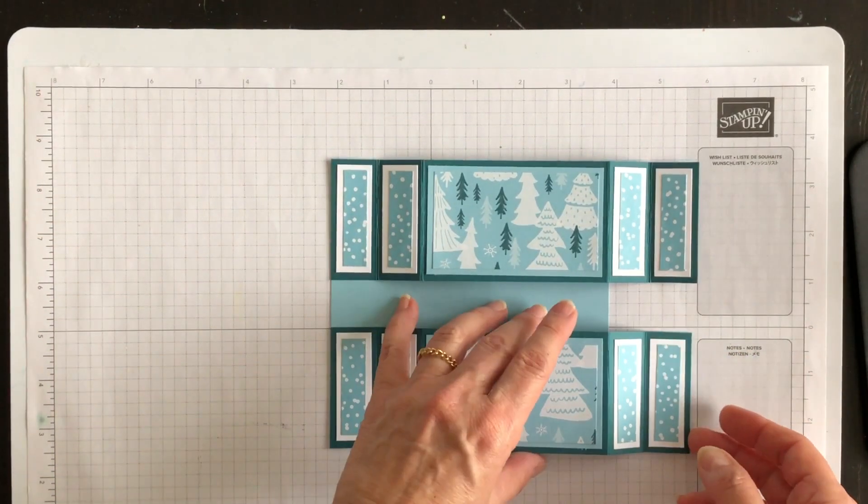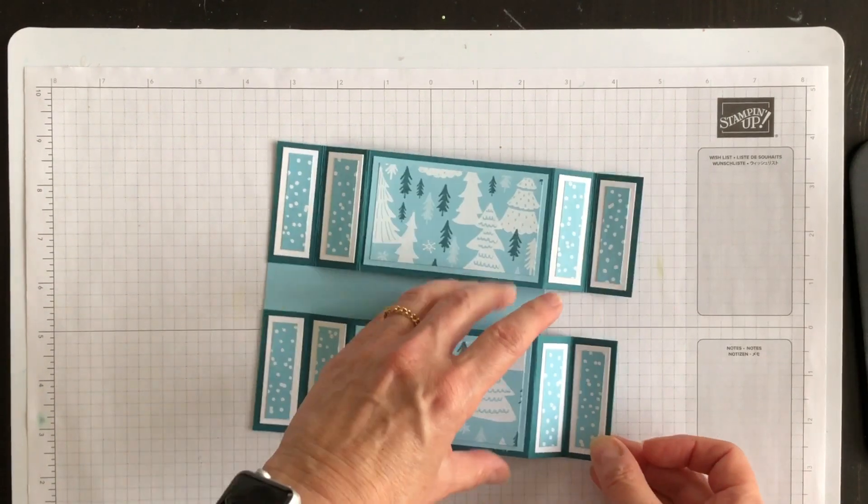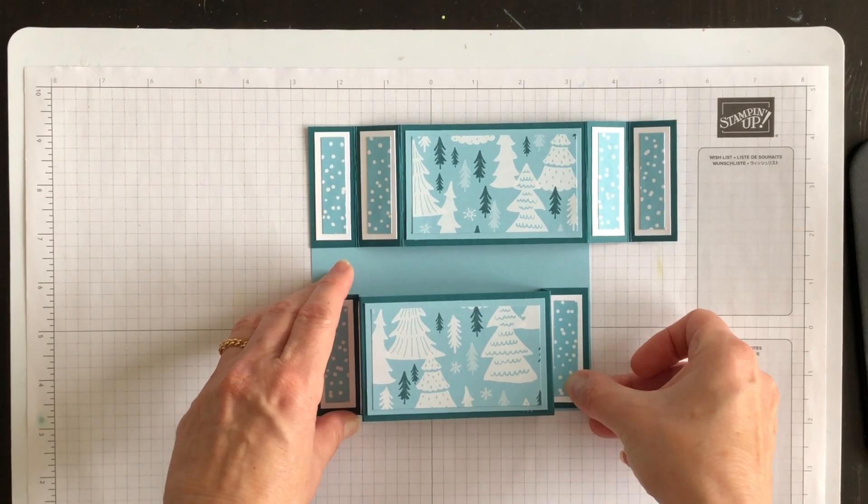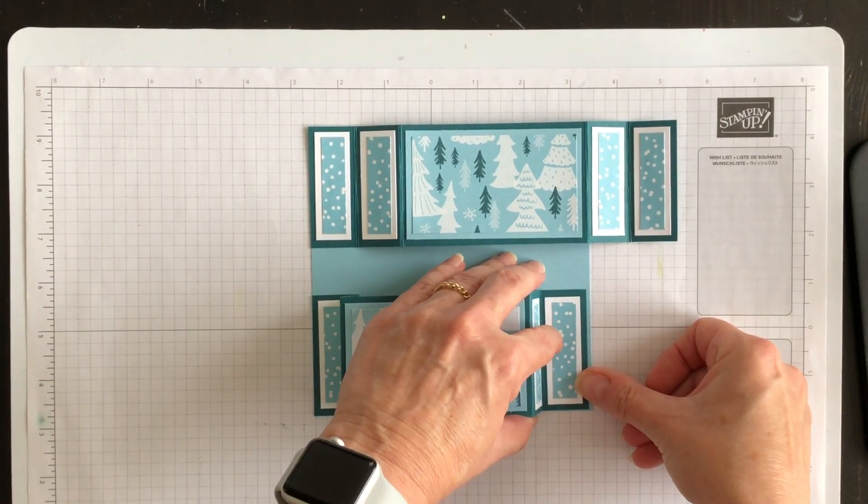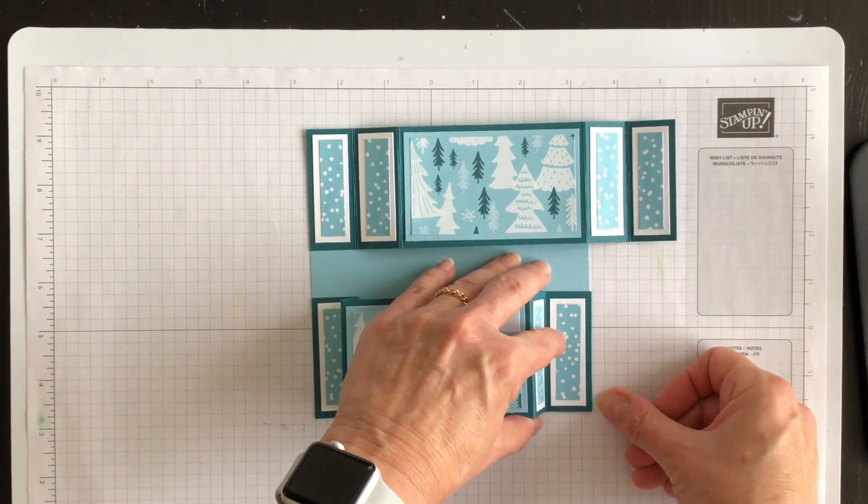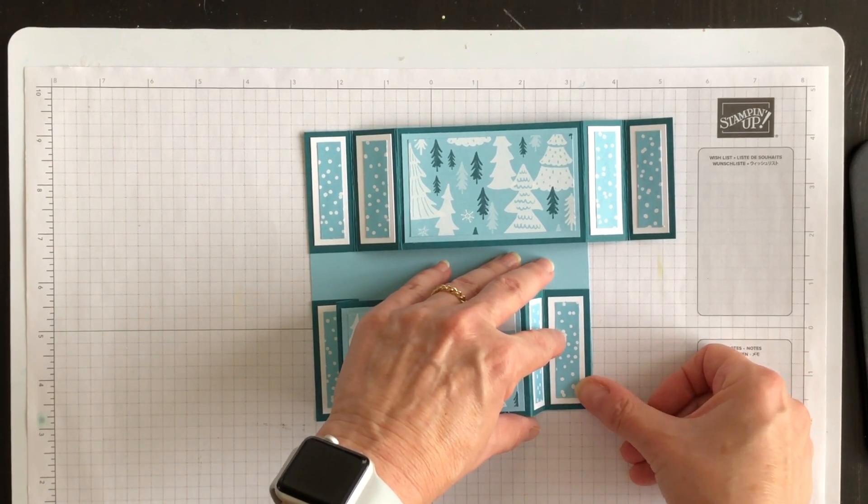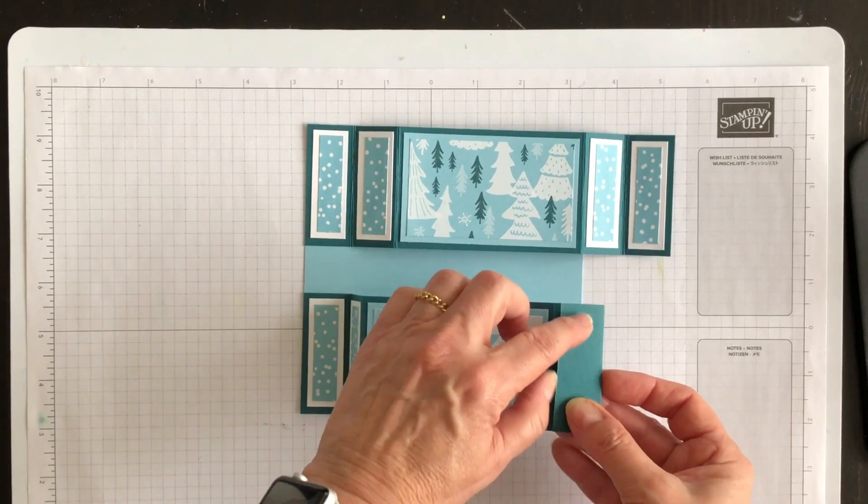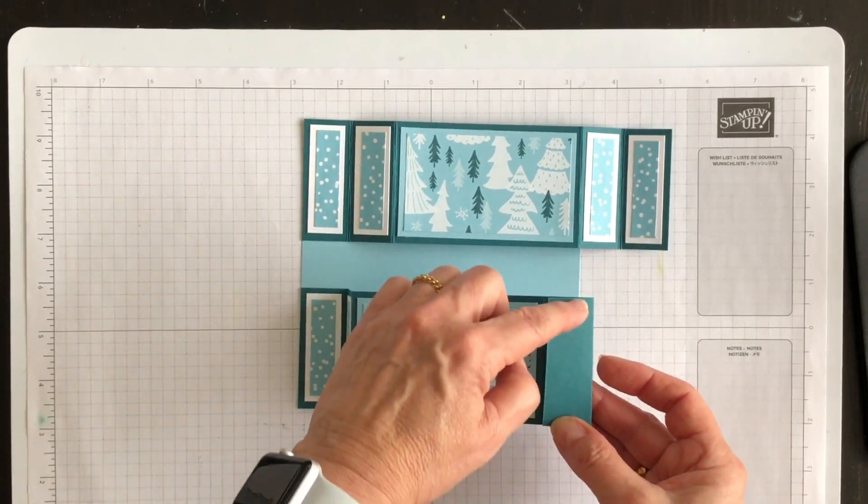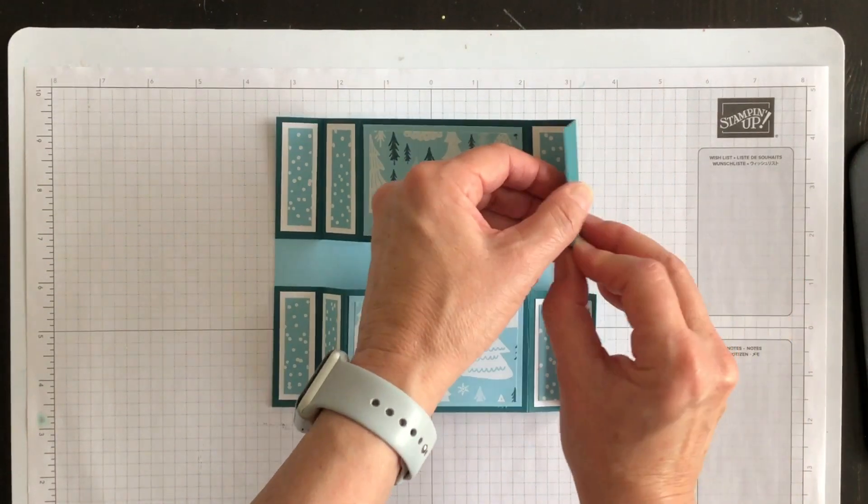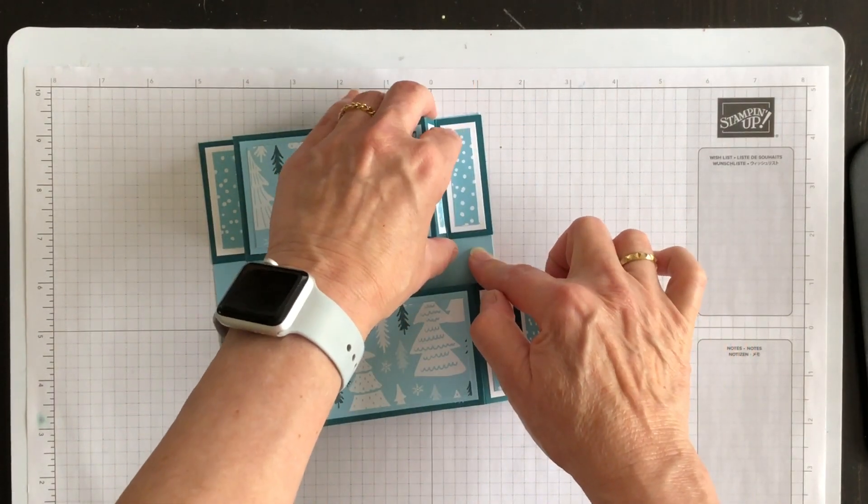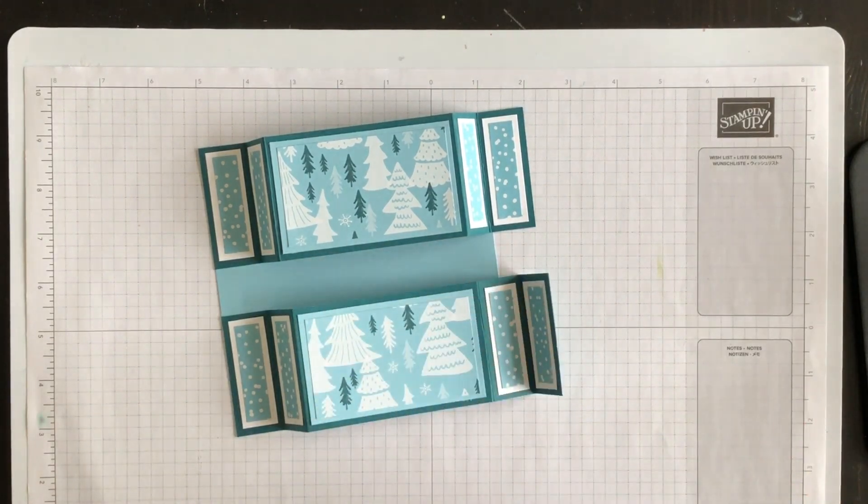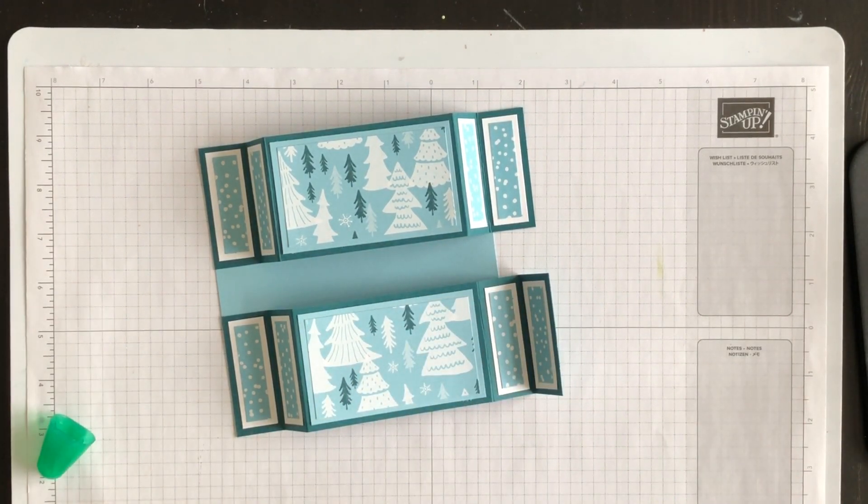And then what we want to do next is we want to bring in this fun fold section and I want to adhere it to the bottom right part of this card base. So I'm going to add some multi-purpose liquid glue here and some multi-purpose liquid glue here and adhere these two pieces down. So I'll go ahead and do that and then I'll show you how this fun fold is shaping up.